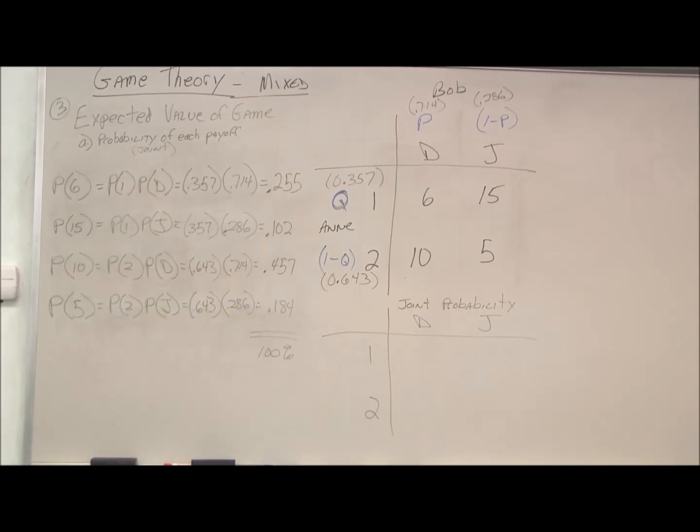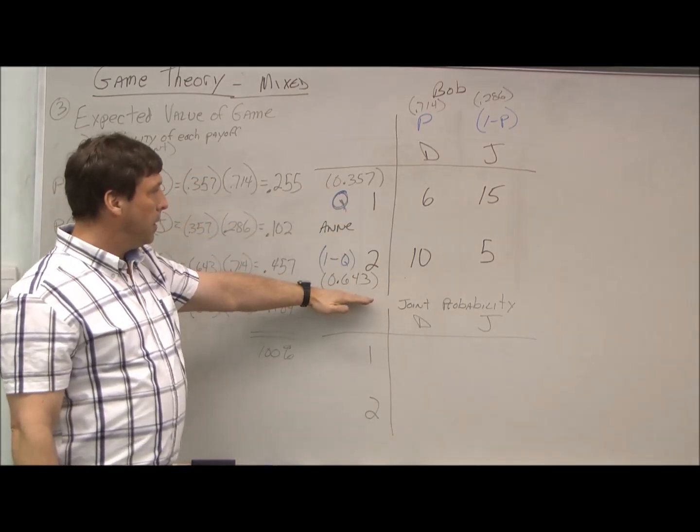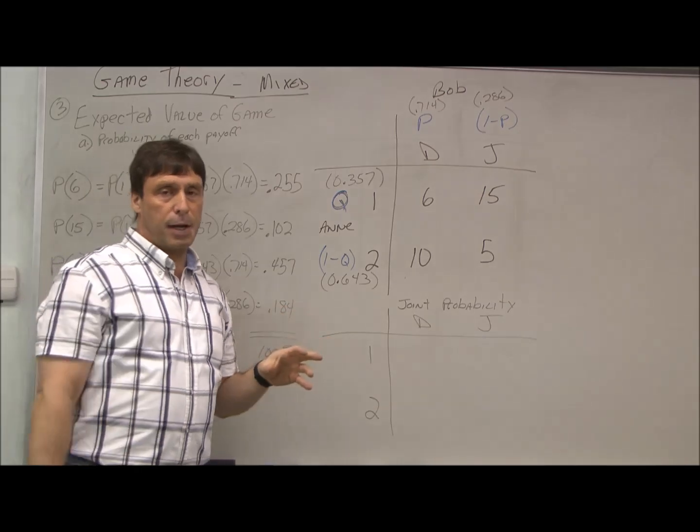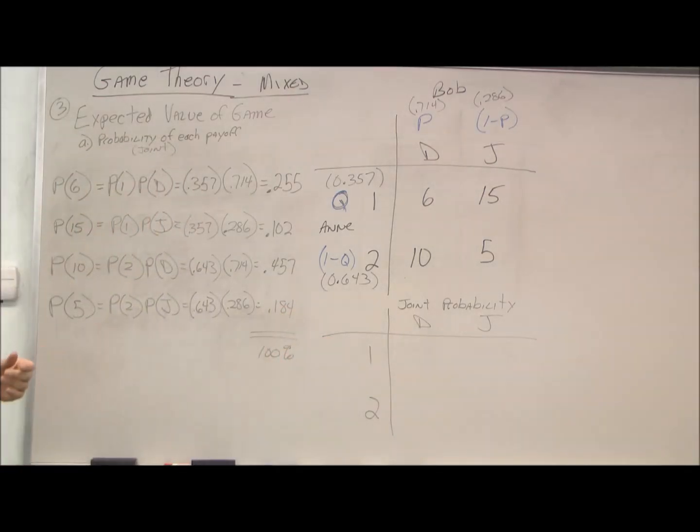Okay, now we have to calculate the expected value of the game. It was easy with the pure solution because it was just the value that both players picked, but in a mixed solution, people are going to be playing different strategies for percentages of time, so we have to do a little bit of calculation to get the expected value. What it really is, we start off with the joint probability and from there we calculate the expected value.